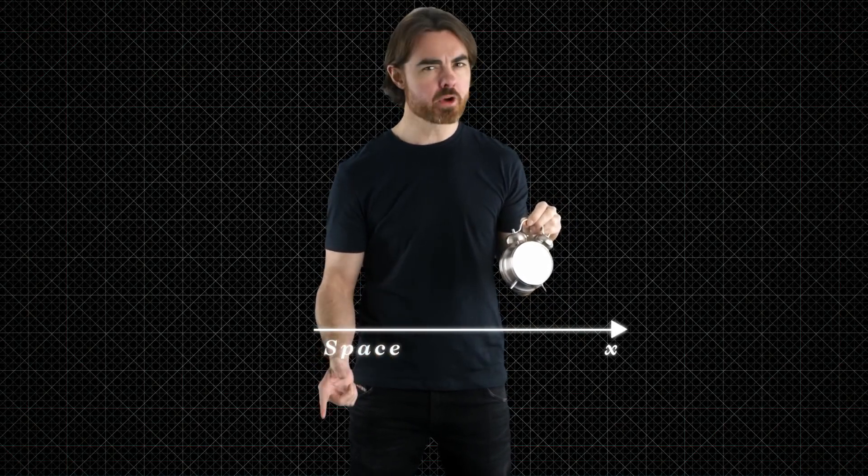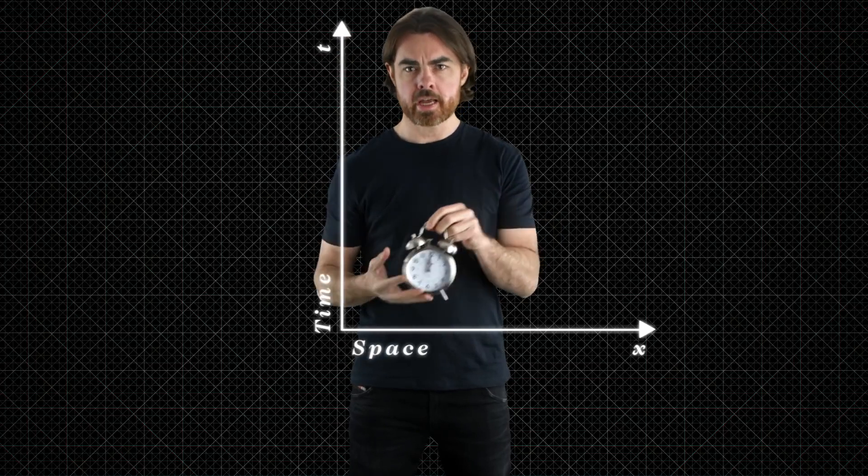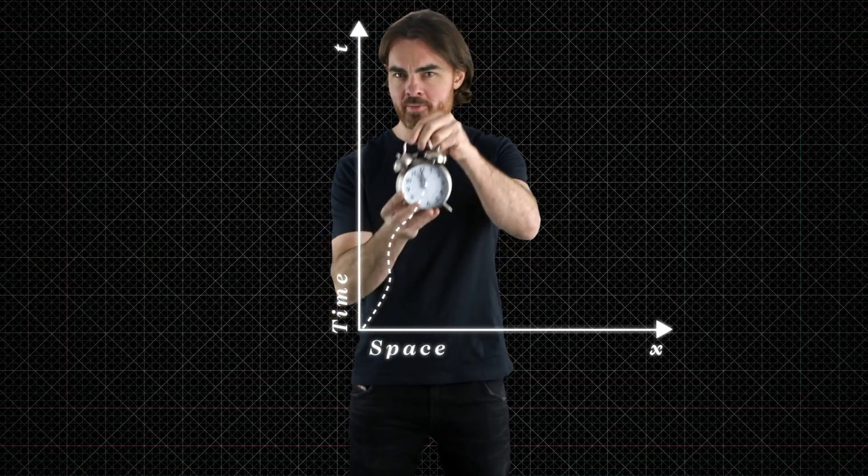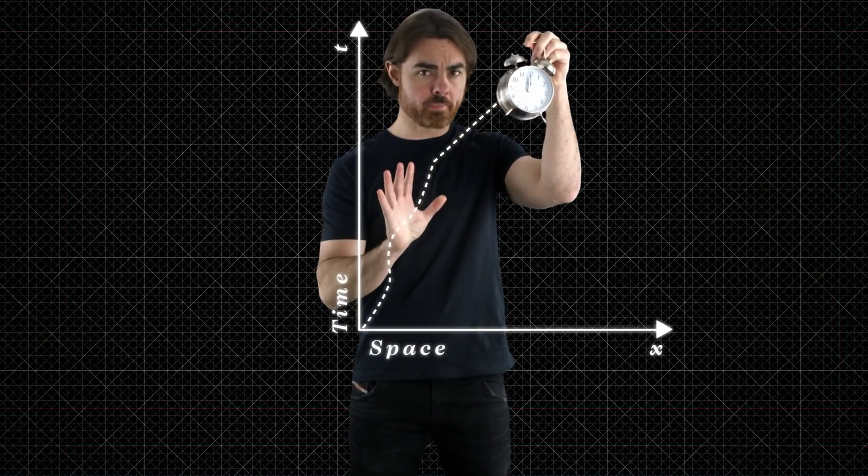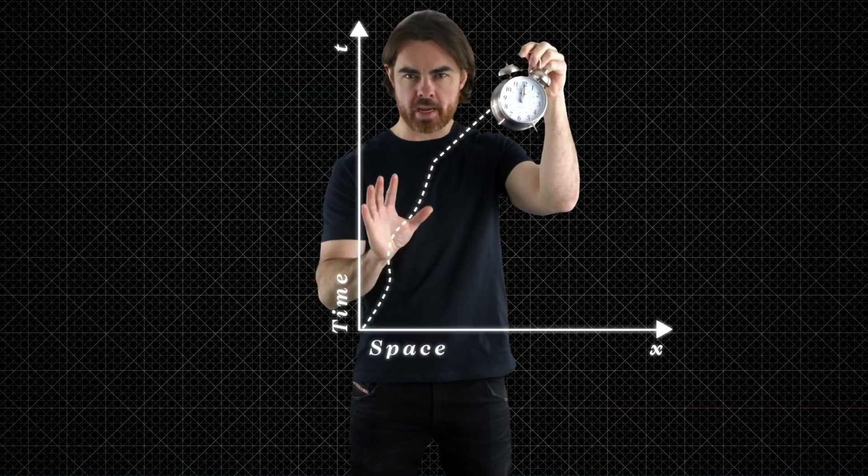A while ago, we introduced the space-time diagram. It's just a graph of position in space, just one spatial dimension for simplicity, versus position in time. In this picture, a thing ends up tracing a path through time and space, and we call that path its world line. In fact, thinking in four-dimensional space-time, a thing is its world line. So we define a thing as its complete spatial and temporal existence.